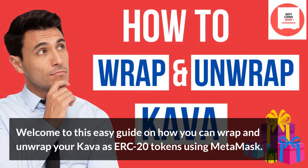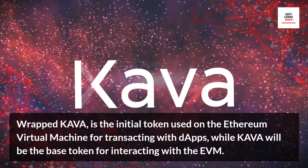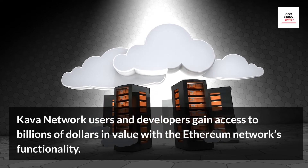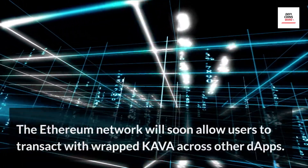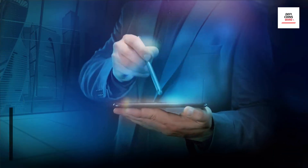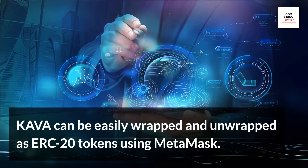Welcome to this easy guide on how you can wrap and unwrap your Kava as ERC-20 tokens using MetaMask. Wrapped Kava is the initial token used on the Ethereum Virtual Machine for transacting with DApps, while Kava will be the base token for interacting with the EVM. Kava network users and developers gain access to billions of dollars in value with the Ethereum network's functionality, which will soon allow users to transact with Wrapped Kava across other DApps.